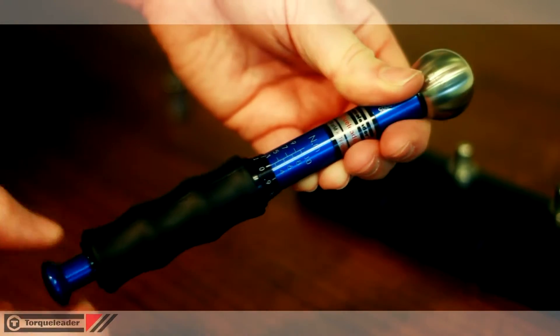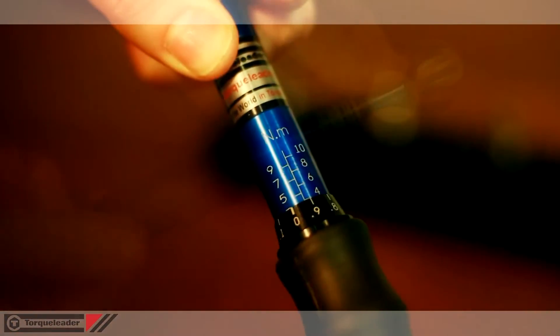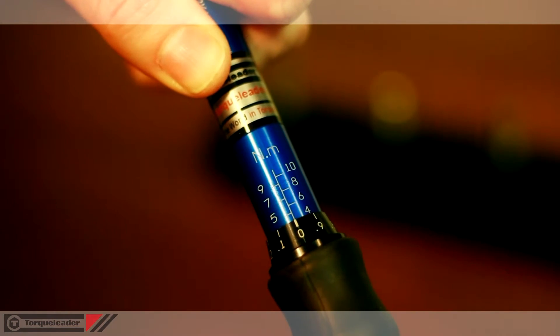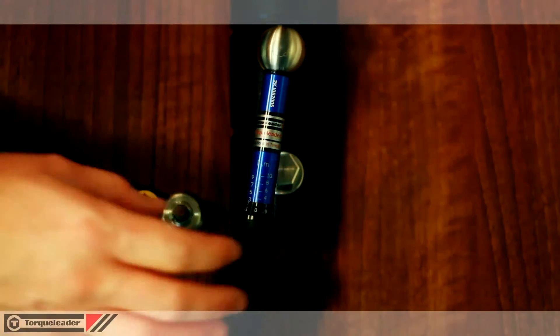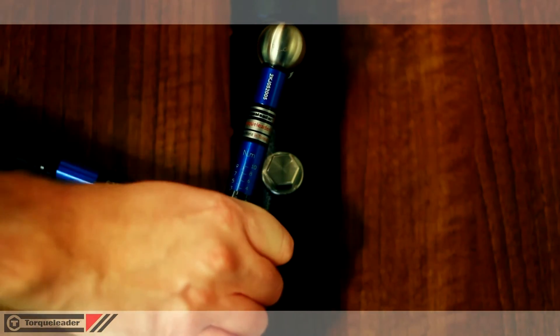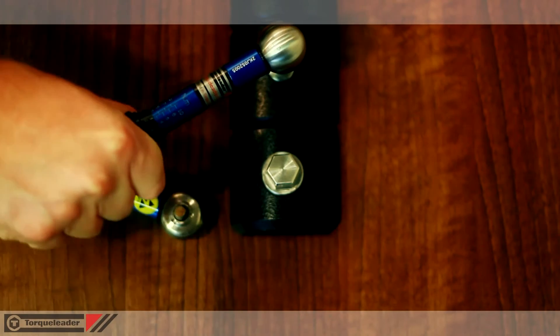Adjusting the torque is very easy. Release the locking knob at the end of the handle and rotate the grip until the required torque is set. At the set torque, the mechanism slips free then resets ready for the next fastener.